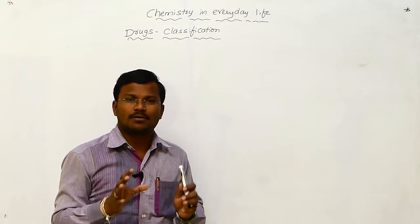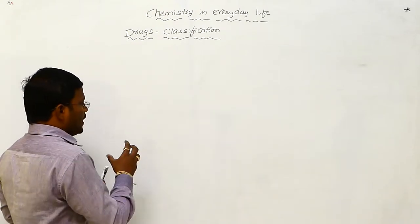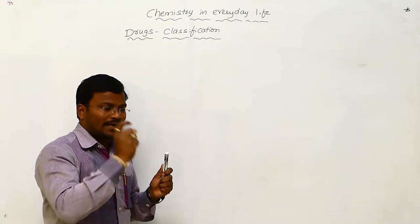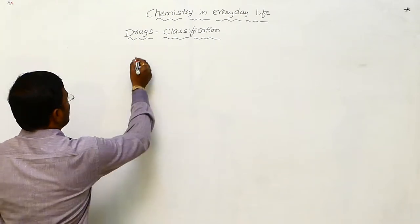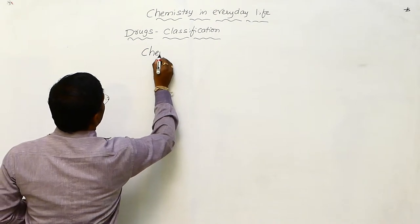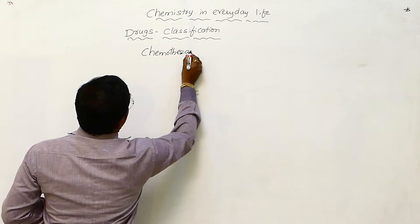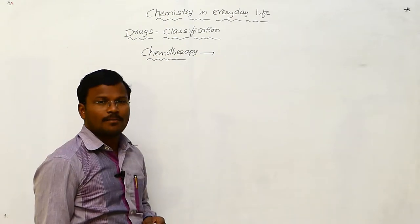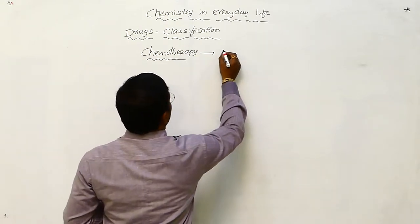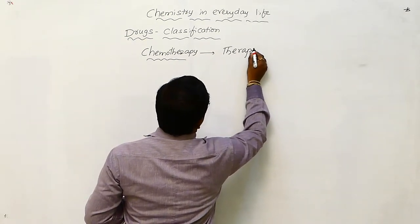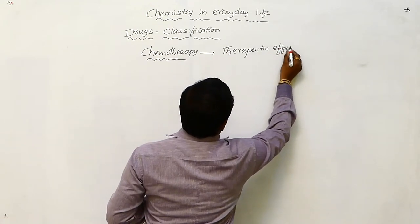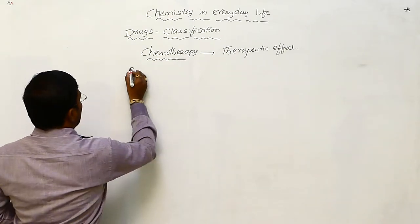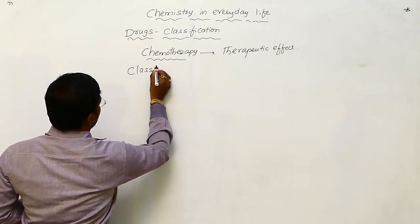If the used chemical substances show a therapeutic effect — that is, a positive or beneficial effect — that condition is called chemotherapy. So chemotherapy refers to the use of chemical substances that produce a therapeutic effect on living organisms.